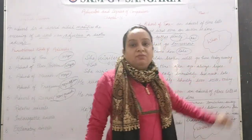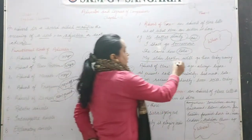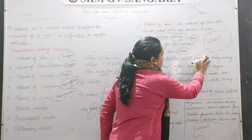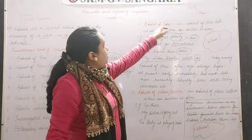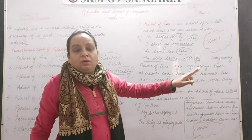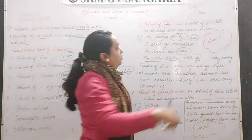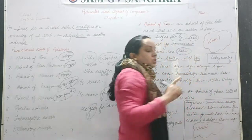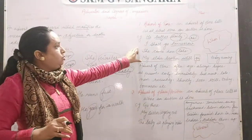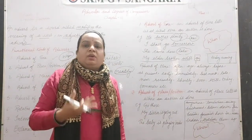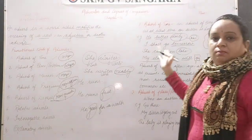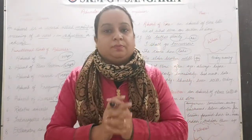In 'My elder brother will go there today evening,' 'elder brother' is subject, 'will' is helping verb, 'go' is main verb. Asking 'when will my elder brother go?' gives the answer 'today evening,' so 'today' is an adverb of time. To summarize: locate the verb in the sentence and then frame a question with 'when' — the answer will be the adverb of time.